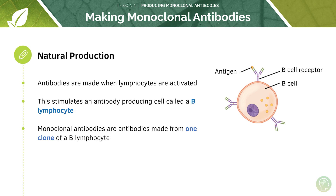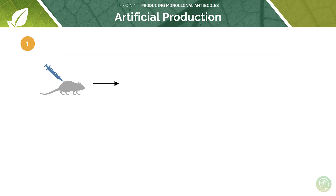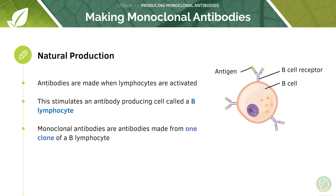To contrast this with polyclonal antibodies, these are made from lots of different clones of B lymphocytes. You can utilise the mono or poly stem of the word: monoclonal antibodies are made from one clone of a B lymphocyte because the stem mono means one, whereas polyclonal antibodies are made from multiple different clones of a B lymphocyte. Remember, you don't have to recall anything specific about polyclonal antibodies. Now let's look at how monoclonal antibodies are made naturally within the human body.